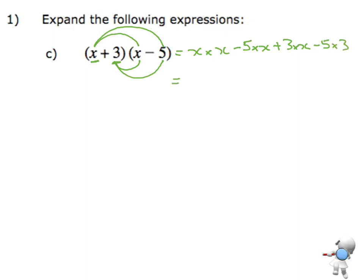Now I want to simplify. x times x is x squared. Minus 5 times x is minus 5x plus 3x minus 15. Now I need to collect like terms.